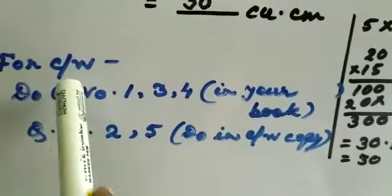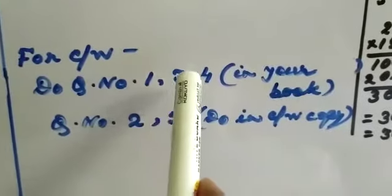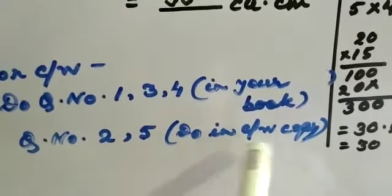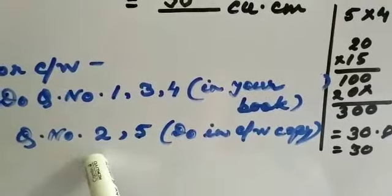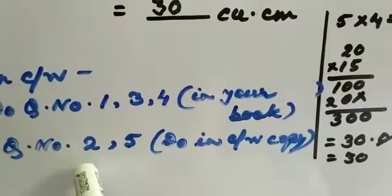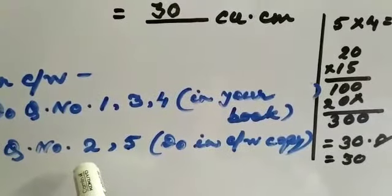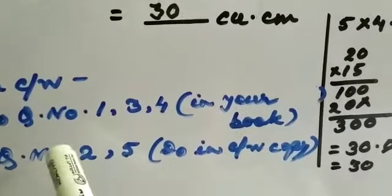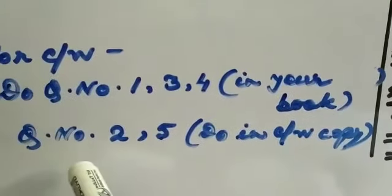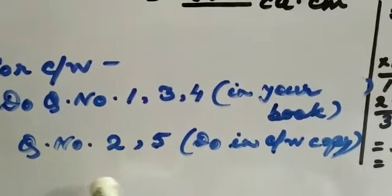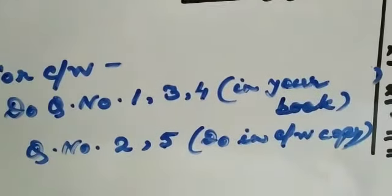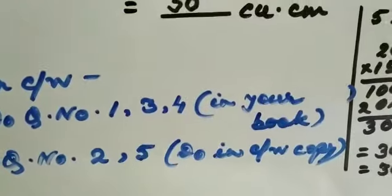Now, for your classwork: do question numbers 1, 3, and 4 in your book. Question numbers 2 and 5 do in your CW copy. In question 2, write only the measurements — length, breadth, and height. Write the unit's name and number and do your classwork. In question 5, make the table in your copy. I think you have understood. I am ending my class here. Om Namah Shivaya.